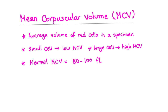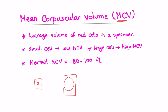Then we have the mean corpuscular volume (MCV). Corpuscle means a cell or body, so MCV is the average volume of a red blood cell. A small cell gives a low MCV; a large cell gives a high MCV. Normal MCV is 80–100 femtoliters. Low MCV means microcytic anemia; high MCV means macrocytic anemia.